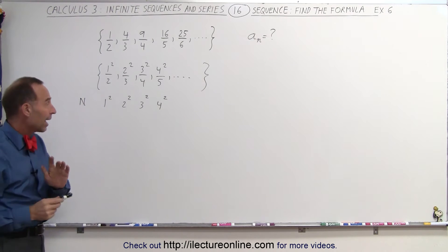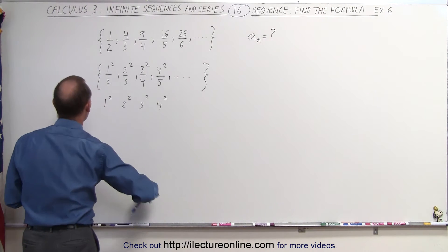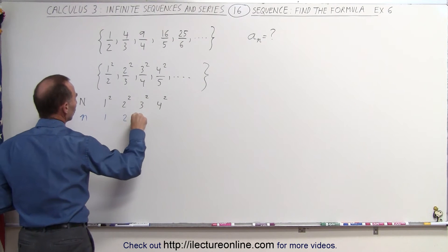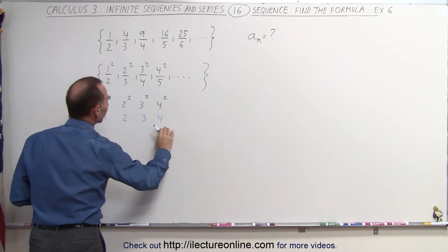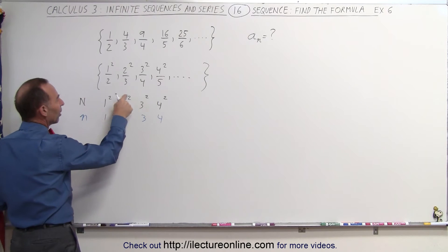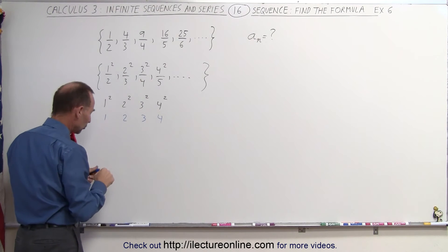If we compare that now to the values of n in each case, and here we can say n can be written as 1, 2, 3, 4. So it immediately becomes evident that the value for n is really the base of the numbers in the numerator.